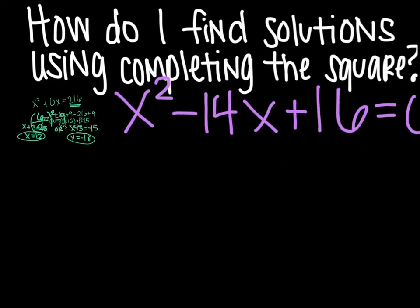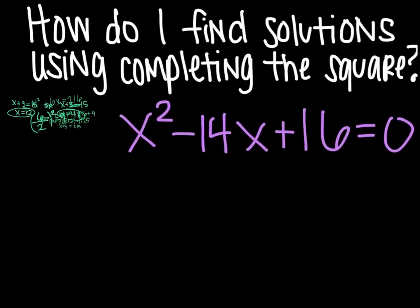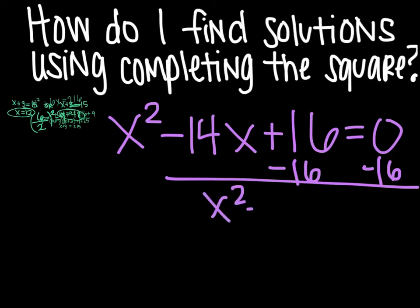Alright, the other example problem I have for you, is x squared minus 14x plus 16 equals 0. So, here you have your equation equal to 0, which you've seen before and are used to. But this one, you can't do any of the other methods with. And so, that's why we're going to complete the square. So the first thing we need to do is move it actually. So, we're going to take away the 16 on both sides. So, we can have x squared minus 14x equals negative 16.